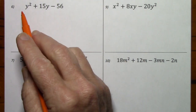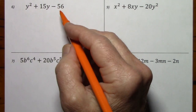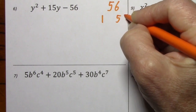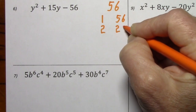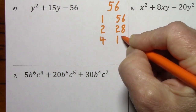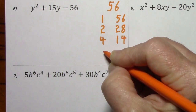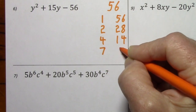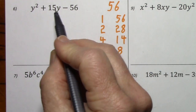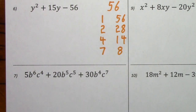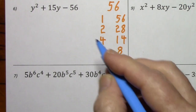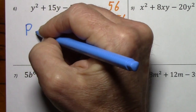Here we have three terms with a leading coefficient of one, so we'll try to factor directly — grab the 56 and list all the factors. Seven does work — 8 times 7. Since that's negative we're looking for a difference of positive 15. Is there any way to get a difference of 15? We could get a sum but not a difference, so number six — this polynomial is prime.